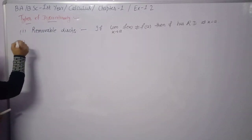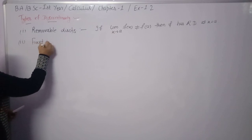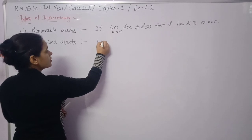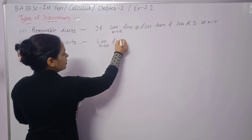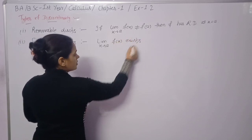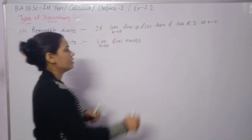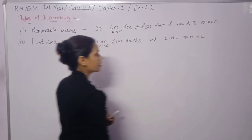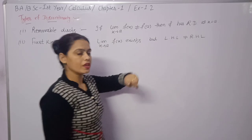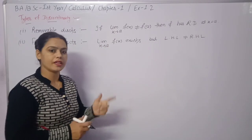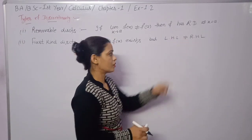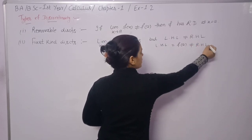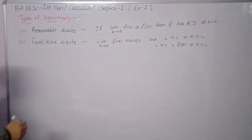Second is first kind discontinuity: the limit x→a of f(x) exists (some finite value), but left hand limit is not equal to right hand limit. It is possible that left hand limit equals f(a) but is not equal to right hand limit — the two one-sided limits are unequal.